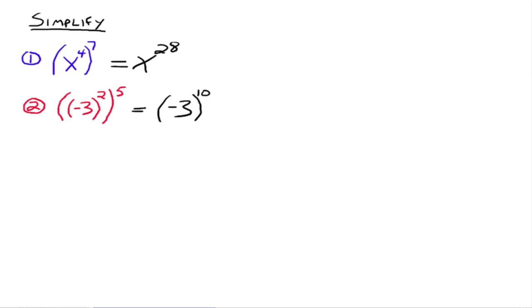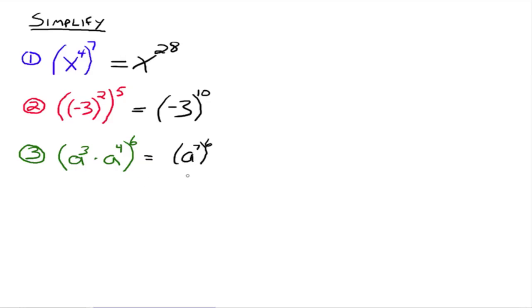What about the next one? We could simplify inside the parentheses first, because a to the third times a to the fourth is a to the seventh. Rewriting it, you still need to keep those parentheses, because all we're doing is simplifying inside them, and whatever that goes to, we're raising it to the sixth power. So now we have a to the seventh, all of that raised to the sixth power, and 7 times 6 gives us 42. So a to the 42 is what this simplifies down to.